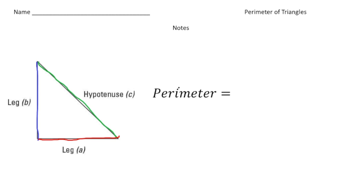So let's just say that the perimeter is going to be the leg plus the second leg plus the hypotenuse.